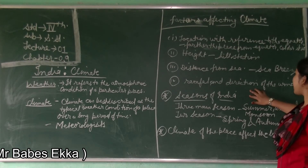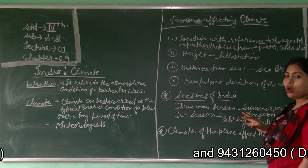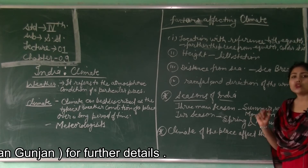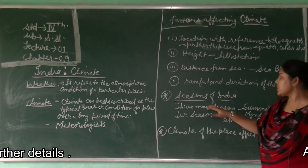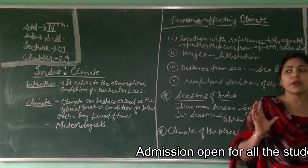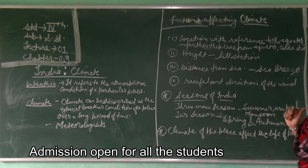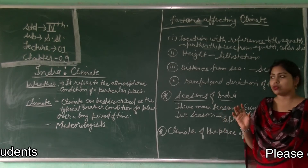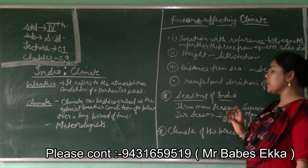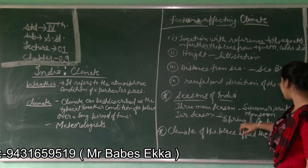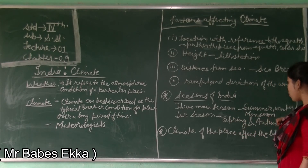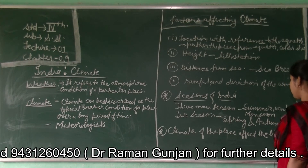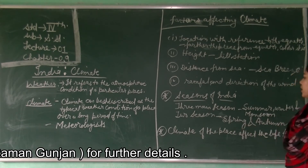Rainfall and the direction of the wind also affect our climate. In India, there are three main seasons: summer, winter, and monsoon. Some areas also experience two more seasons — spring and autumn. We will look at summer, winter, monsoon, spring, and autumn one by one.